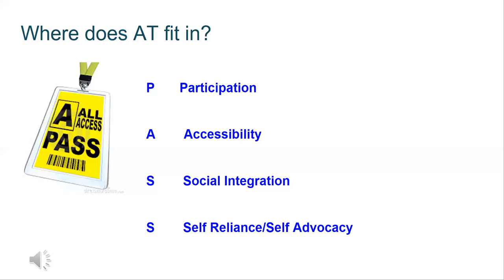The next one is social integration. We are social people and our classrooms are social places. Once those social rules and expectations are in place, we want to make sure students actually have the tools to be social — to interact with each other and with adults. That could mean a communication device or a communication board of some kind if students are unable to speak.